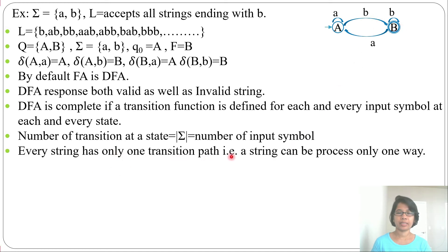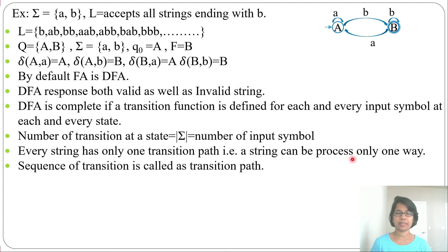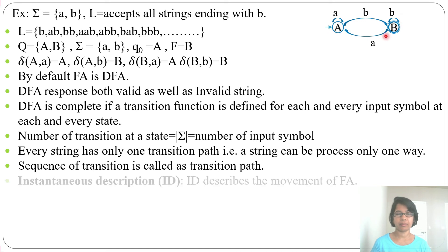Take an example: string b, a, b. From state A it goes to state B (by b), then from state B it goes to state A (by a), then from state A it goes to state B (by b). There is just one way the string can be processed. The sequence of transitions is called the transition path — for b, a, b the path is A → B → A → B.